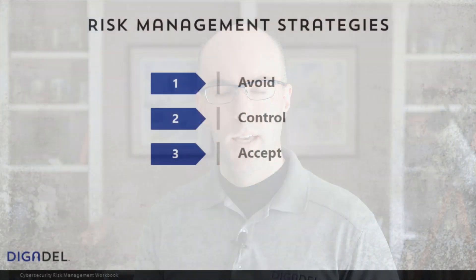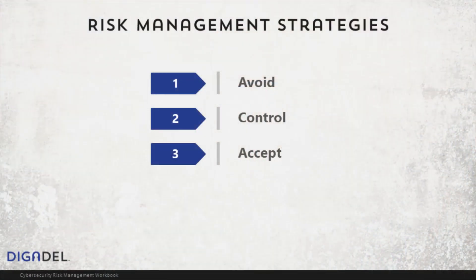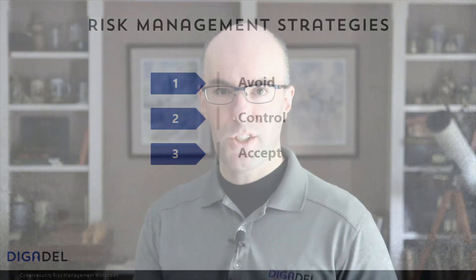It is difficult to mitigate all risk associated with an activity. Any risk that remains after controls have been applied is known as residual risk. The third strategy is accept. Accepting risk means you continue to perform the activity with no mitigations in place, but only after a conscious decision has been made to do so. The conscious decision is informed by analyzing the various risk components before proceeding.